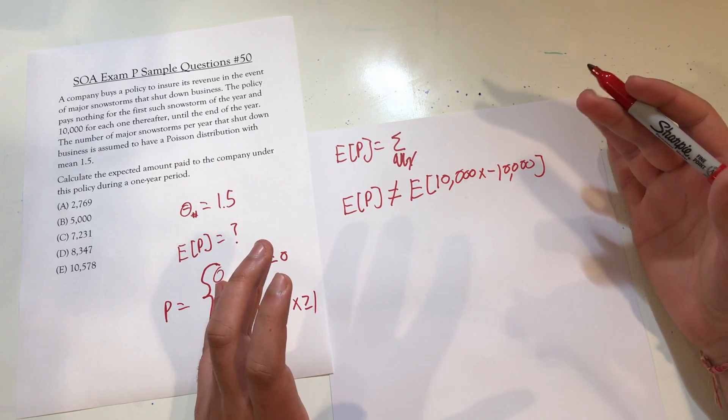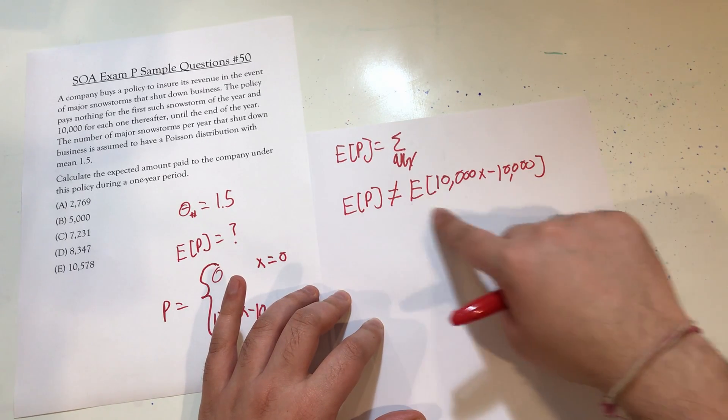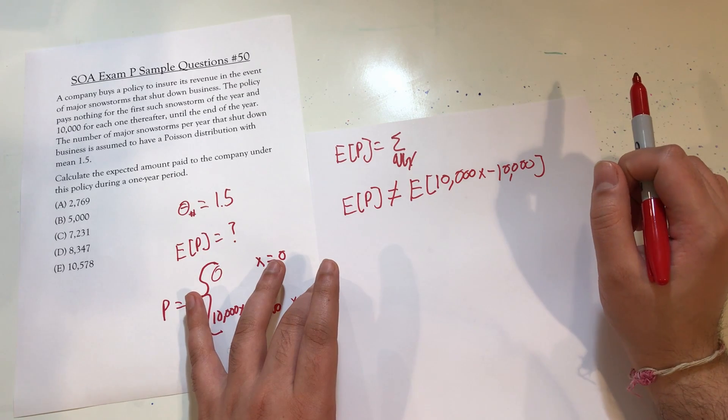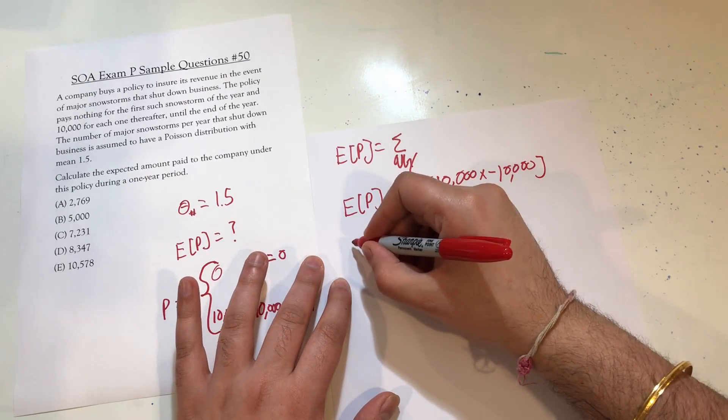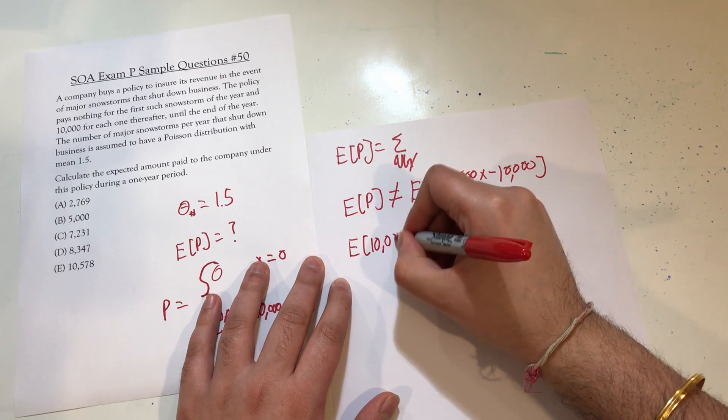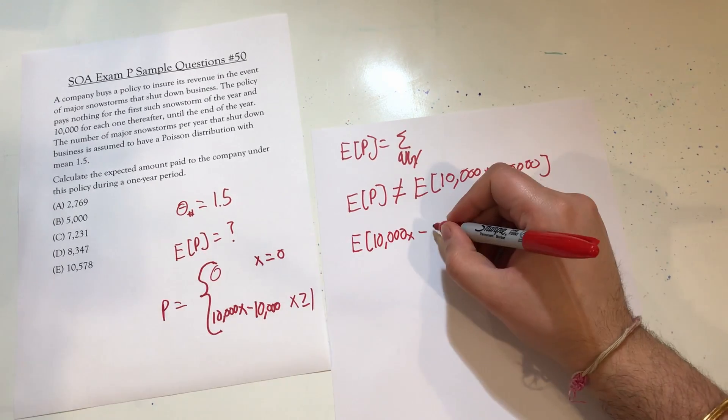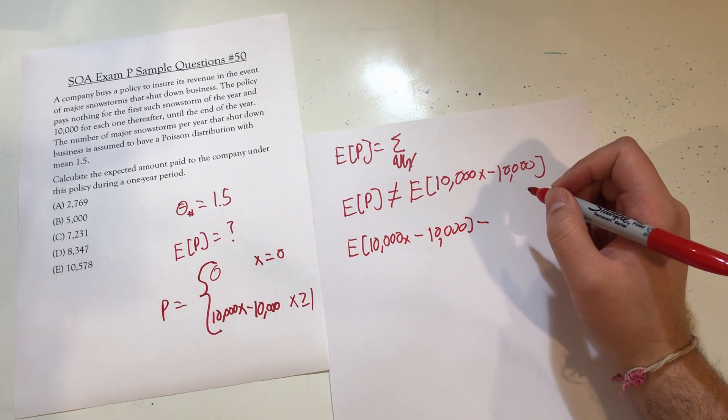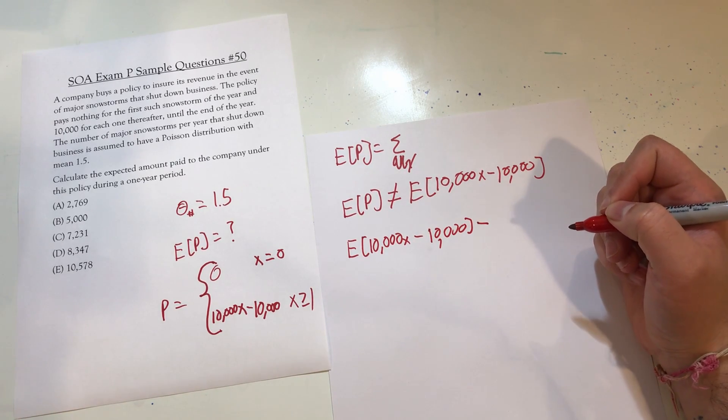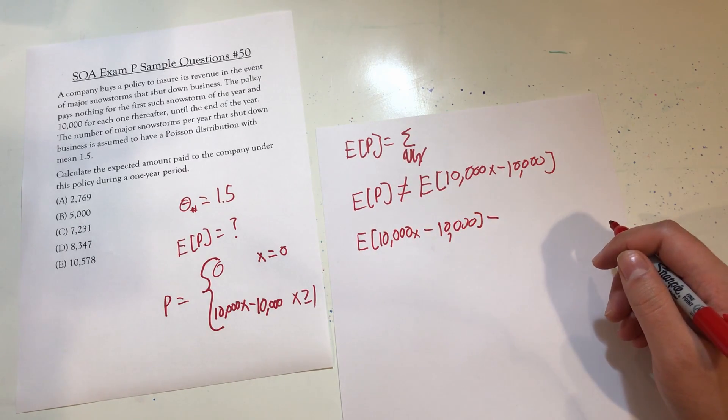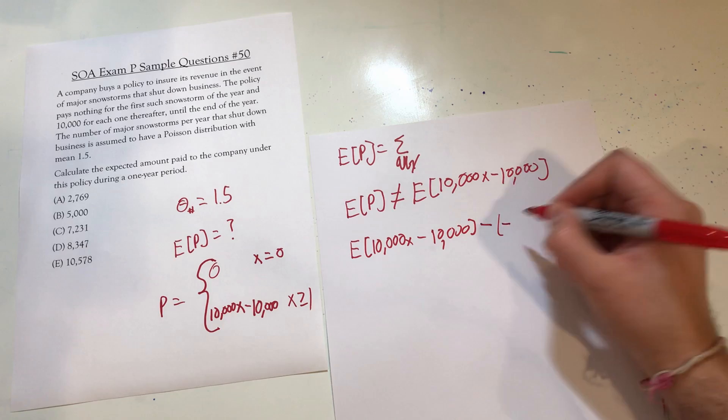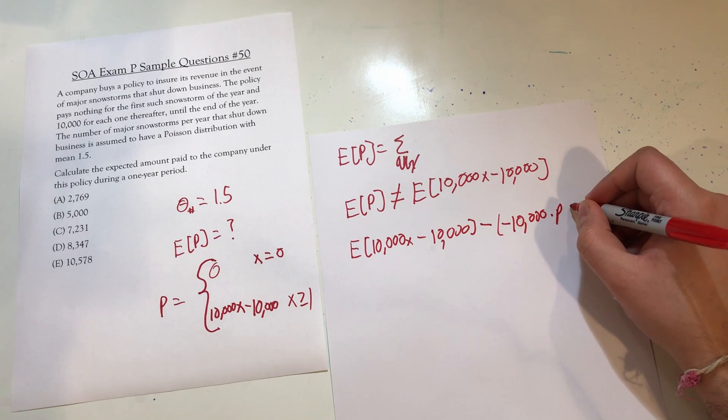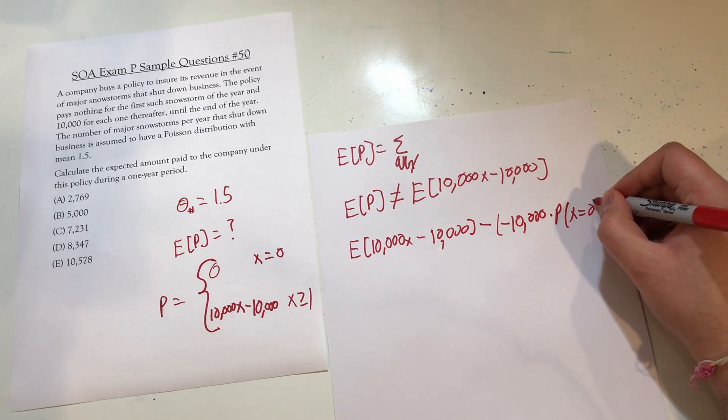The easiest thing to do, in my opinion, would be to actually calculate this expected value and take away the situation where we're including this. So what we do is calculate the expected value of 10,000x minus 10,000. And then we're going to subtract away that first term in this summation. Since we're doing discrete, it would be the amount, so negative 10,000 would be the amount we would pay, times the probability of x equaling zero.